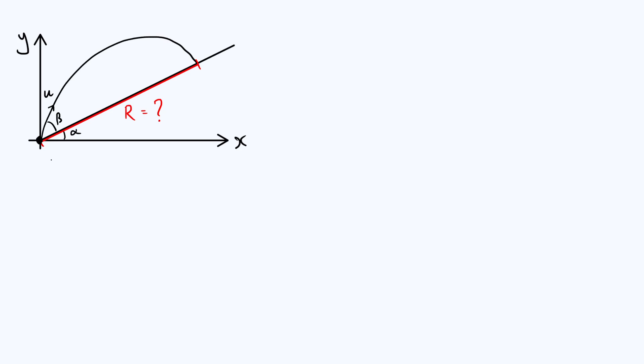We've got a straight line which is an inclined plane making an angle alpha to the x-axis. Then we've got our projectile being launched with an initial velocity such that the initial speed is u and the velocity vector initially makes an angle beta to the inclined plane itself.